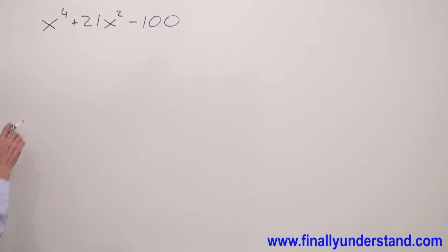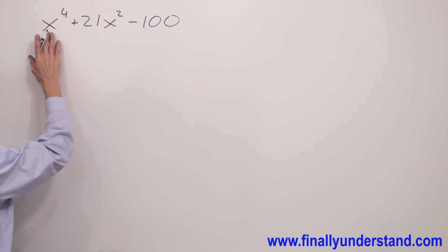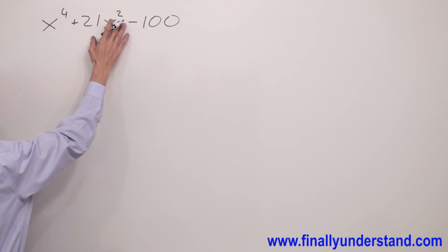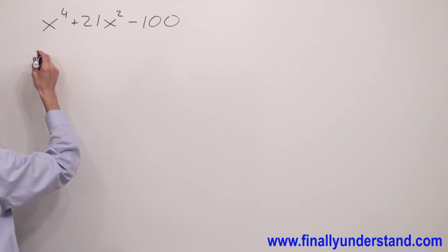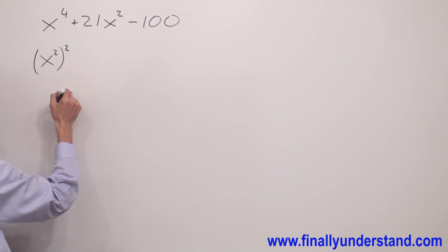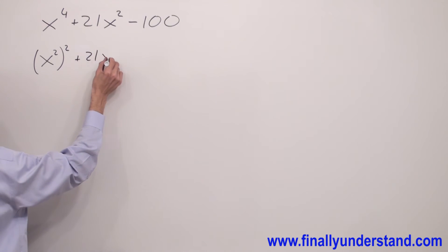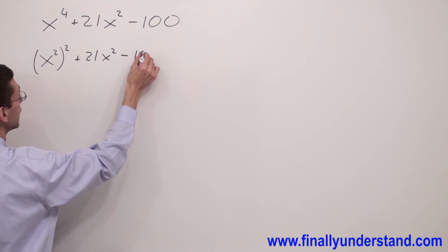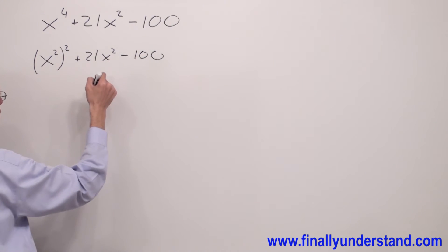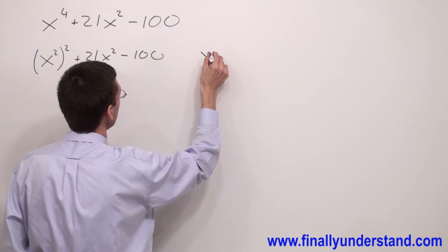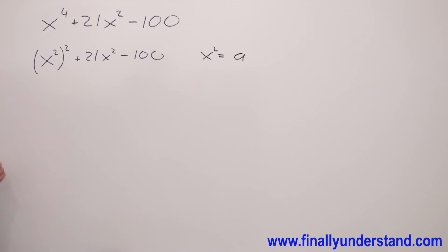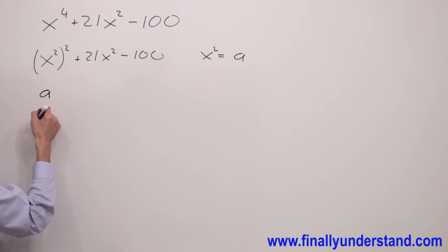Let's take a look at this example. In the first term of my trinomial I have x to the fourth, and in the second term I have x to the second power. I can rewrite the first term as x to the second power raised to the second power, plus 21x squared minus 100. If I have x squared in both the first and second terms, I can assume that x squared equals a, and rewrite this trinomial with a to make it look simpler.